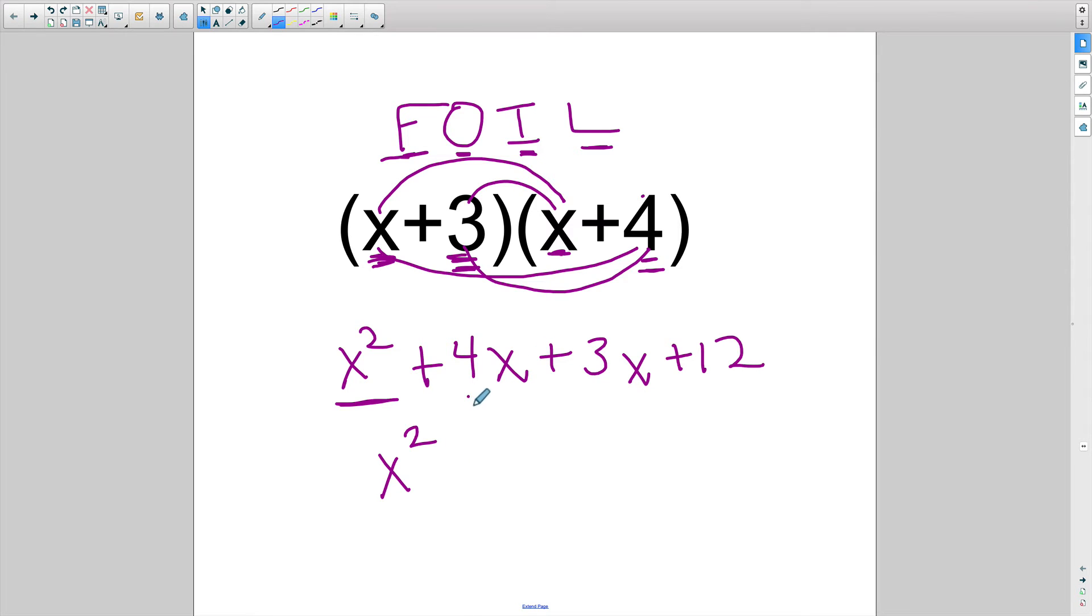But you can see in the middle here I have a 4x and a 3x. Both are like terms. It's an integer and then it's connected to a variable, an integer connected to a variable that's not squared or anything. It's just simply the variable. So I can combine these two. So when I add 4x plus 3x, I get a 7x.